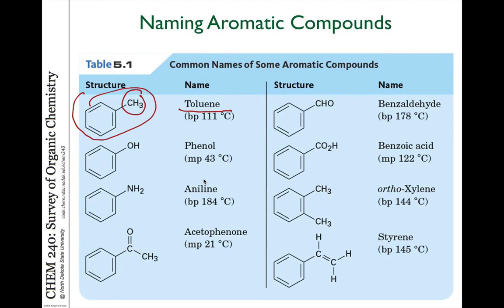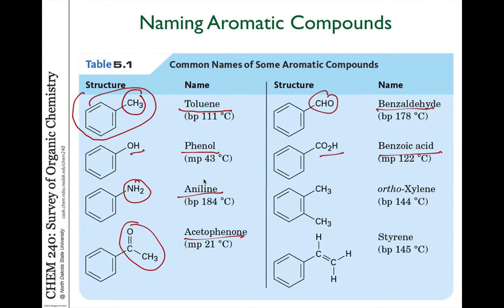The OH compound is called phenol or hydroxybenzene. Aniline is aminobenzene — aniline includes the NH2 as part of the parent. Aminobenzene is an amino substituent on a benzene ring. Acetophenone has an acetyl group on it. Benzaldehyde has an aldehyde group. Benzoic acid has a CO2H group. Xylene has two CH3 groups, so two alkyl groups, and the xylene name includes both of those as part of the parent molecule.